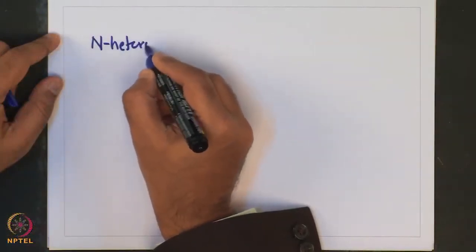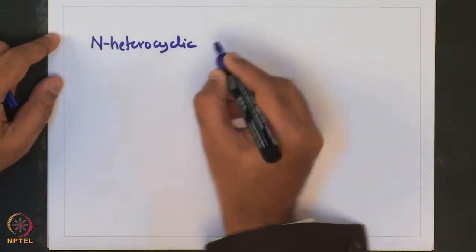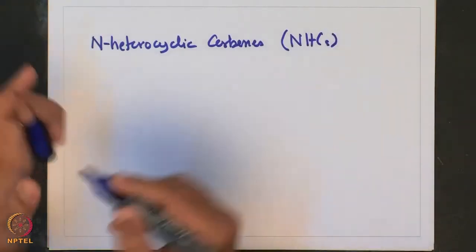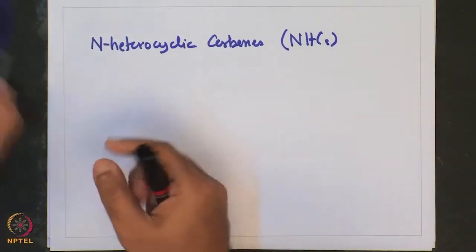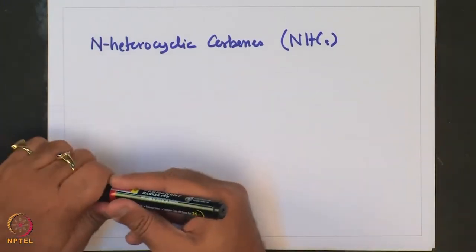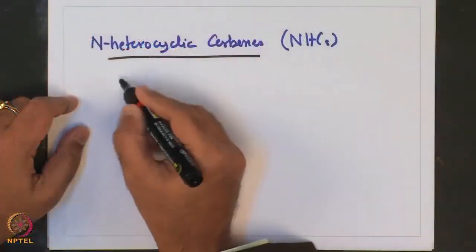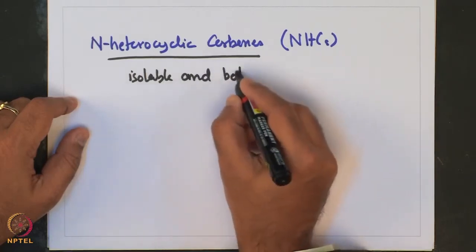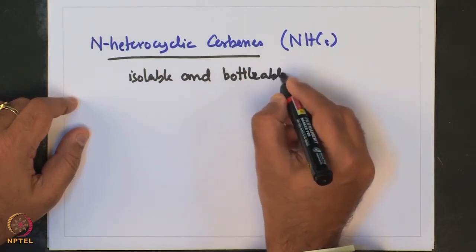With regard to transition metal carbene complexes, we had come across the free carbenes which are called N-heterocyclic carbenes, or referred to as NHCs. Usually carbenes are extremely reactive molecules and very difficult to isolate and characterize. From that perspective, these NHCs are important because they are isolable and bottleable carbenes.